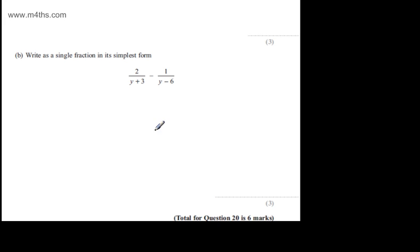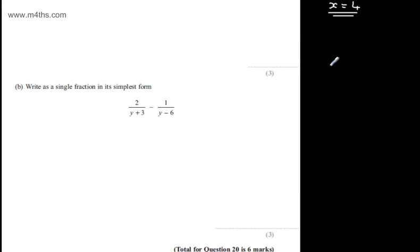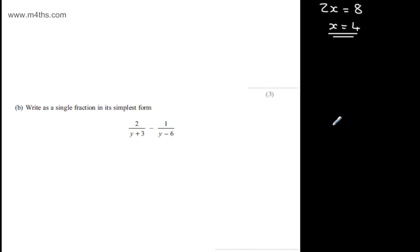In part B for three marks, we're asked to write as a single fraction in its simplest form 2 over y plus 3 minus 1 over y minus 6. The first thing I want then is a common denominator. The common denominator is simply going to be the multiple of y plus 3 multiplied by y minus 6.